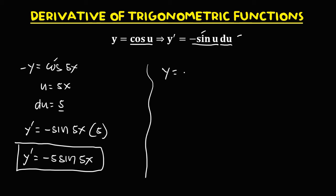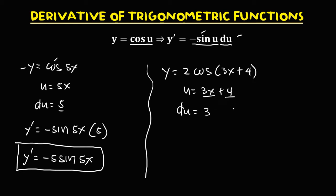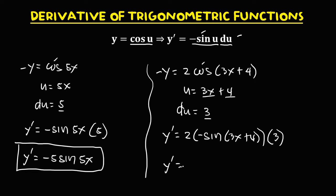For y equals 2 times cosine of 3x plus 4, u equals 3x plus 4. The derivative of 3x is 3 and the derivative of 4 is 0, so du equals 3. To find the derivative: we have 2 times negative sine of 3x plus 4, times the derivative of u, that's 3. So y prime equals 2 times negative 1, that's negative 2, and negative 2 times 3, that's negative 6, then sine of 3x plus 4.